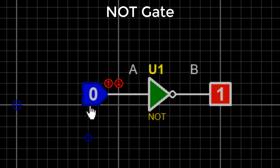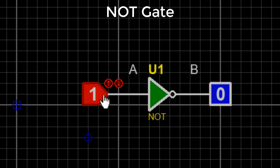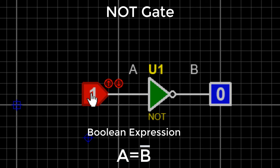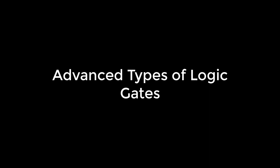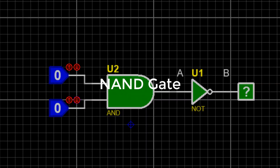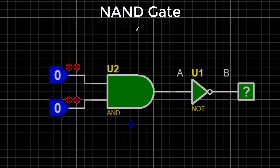The NOT gate has only one input and one output. If we apply zero at the input, it gives one at the output, and if we apply one at the input, it gives zero at the output. The boolean expression of the NOT gate is that the output is the complement of the input.